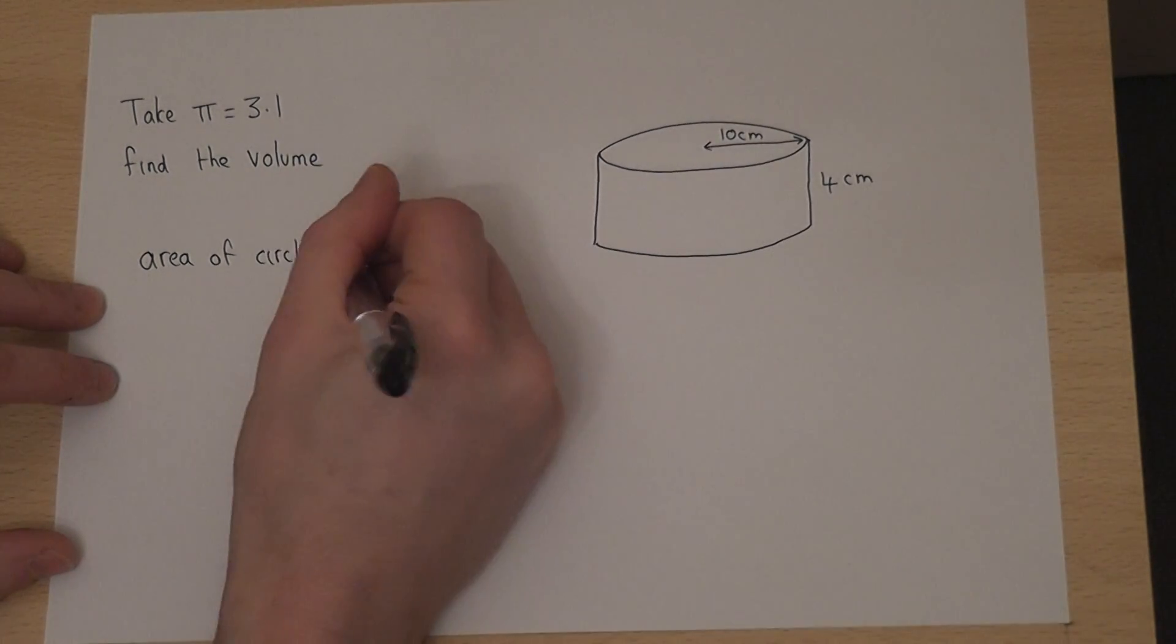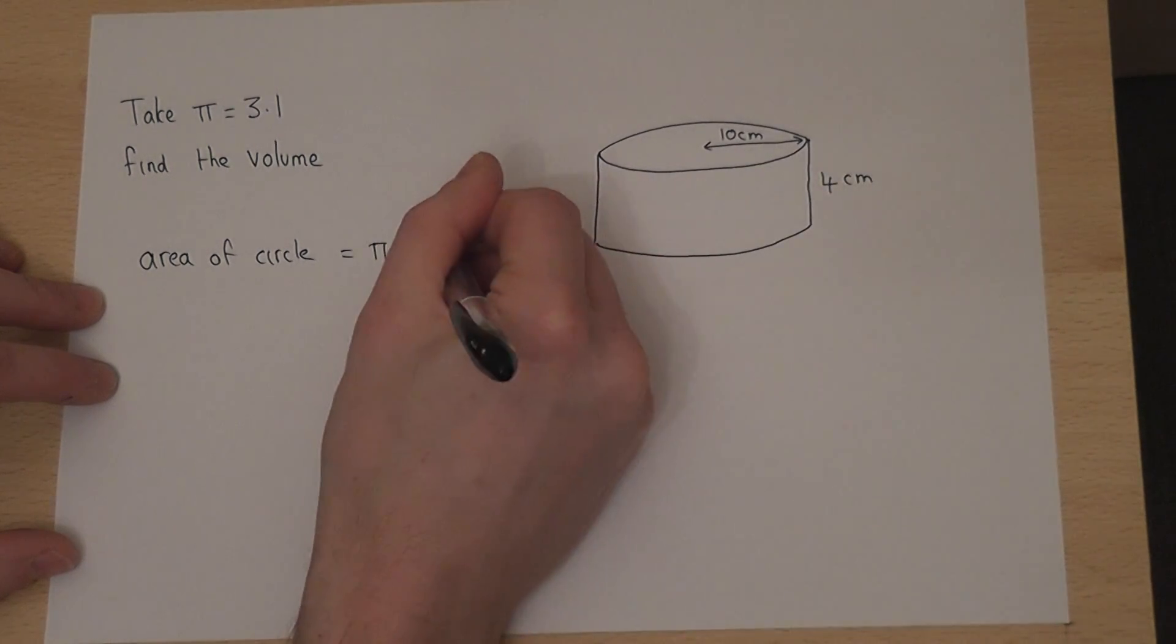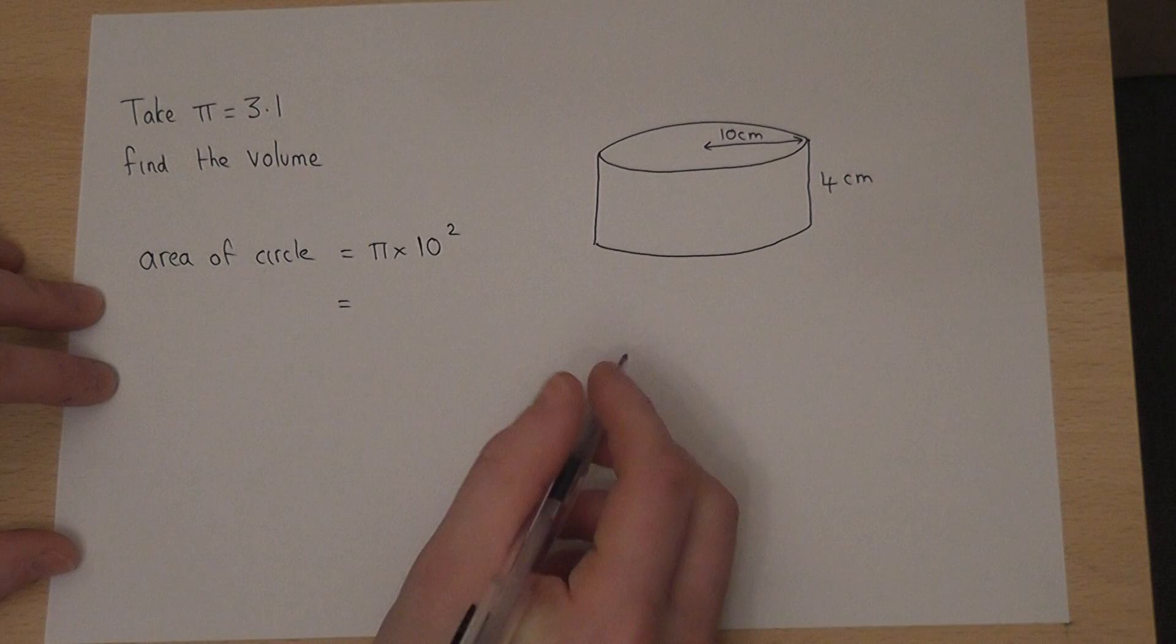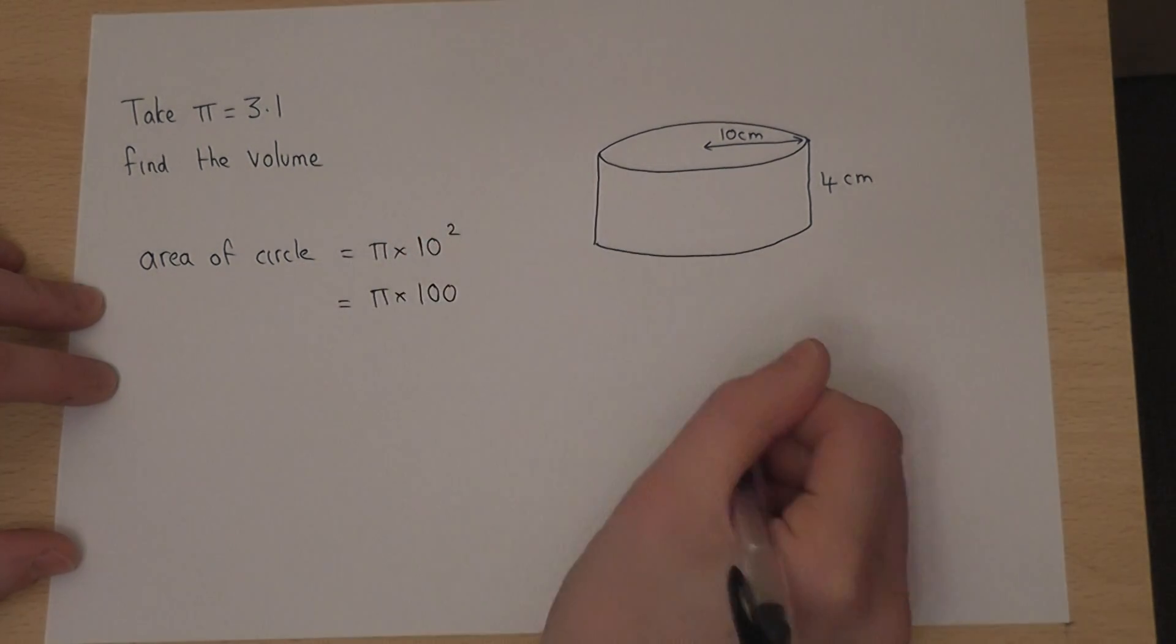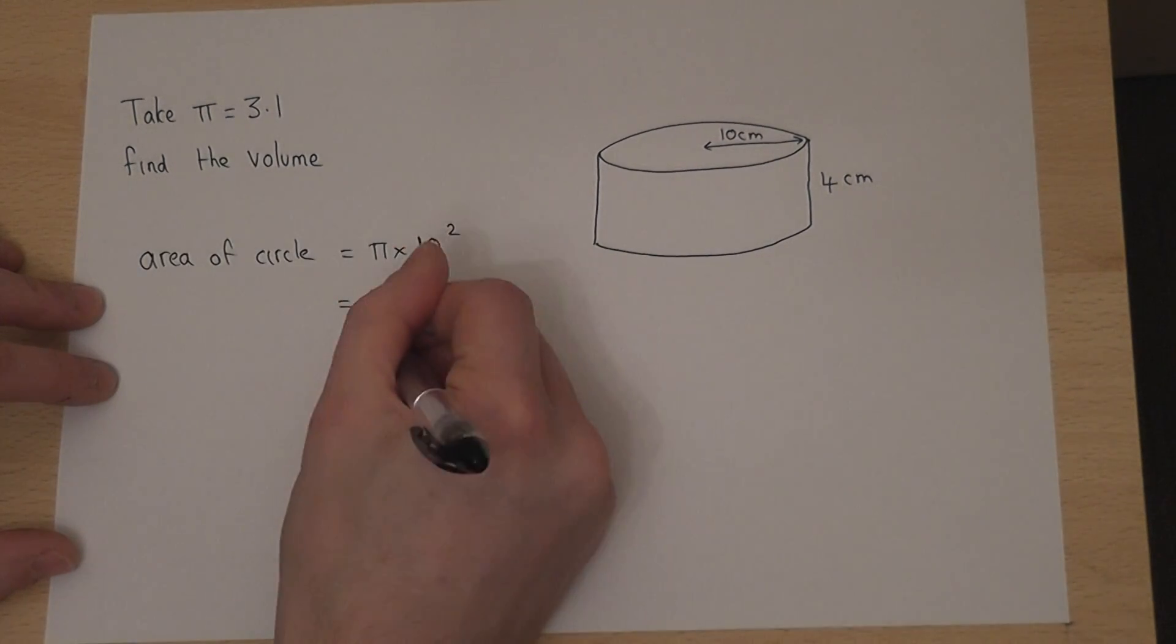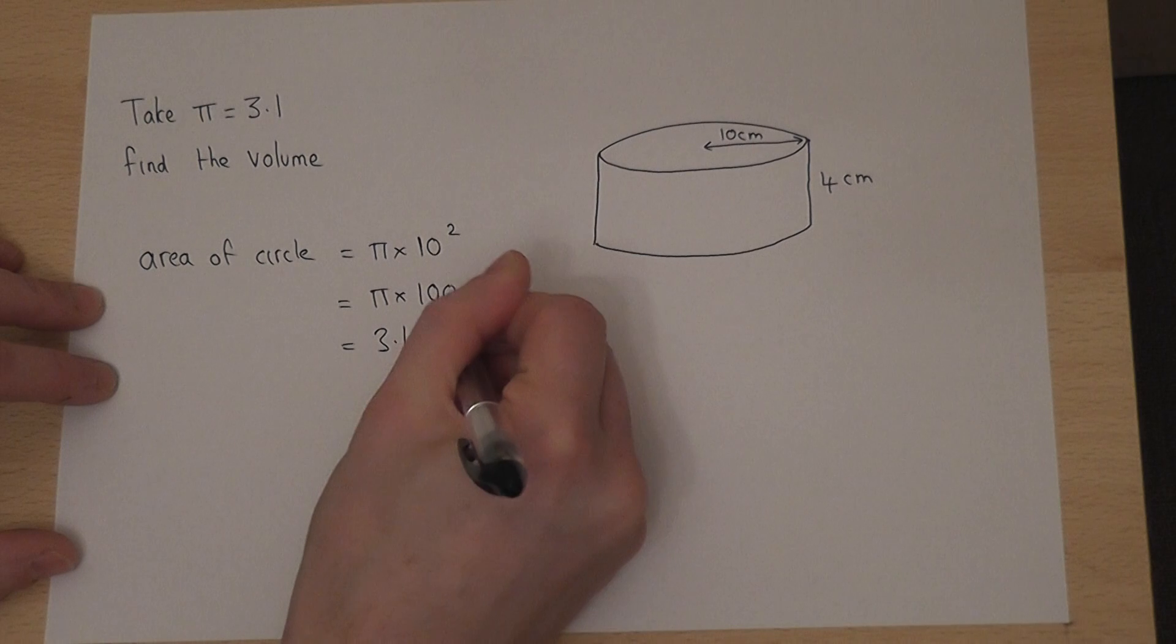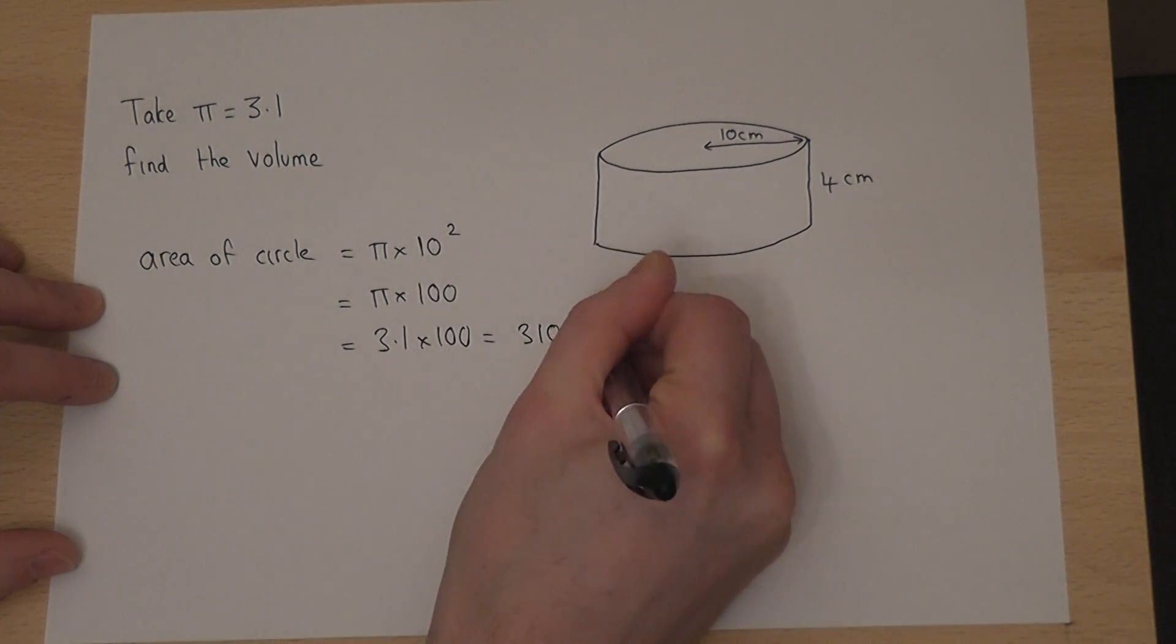Now the area of this will be pi times the radius, which is 10, pi times 10 squared. Well 10 squared is 100, so it's pi times 100, and we're told to take pi to be 3.1. So 3.1 times 100 becomes 310 cm squared.